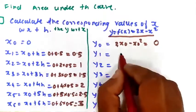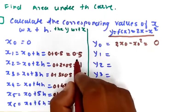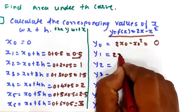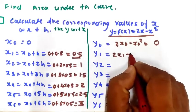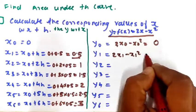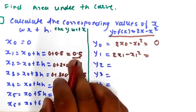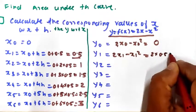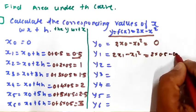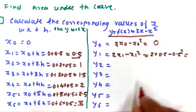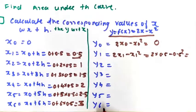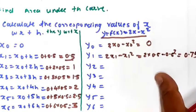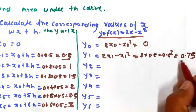For y1, we substitute the corresponding value x1 = 0.5 into the function: y1 = 2×0.5 minus 0.5 squared = 1 minus 0.25 = 0.75. So y1 = 0.75.